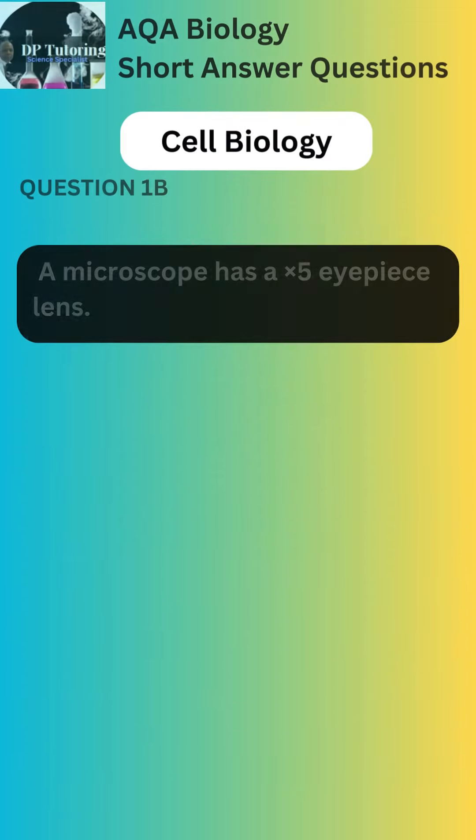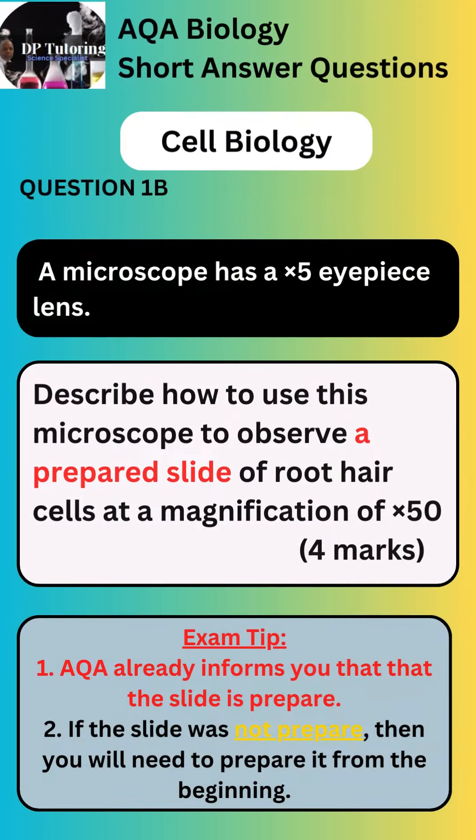Part B of the question informs you that a microscope has a x5 eyepiece lens. AQA asks you to describe how to view the root hair cells at x50 magnification. A few tips here.